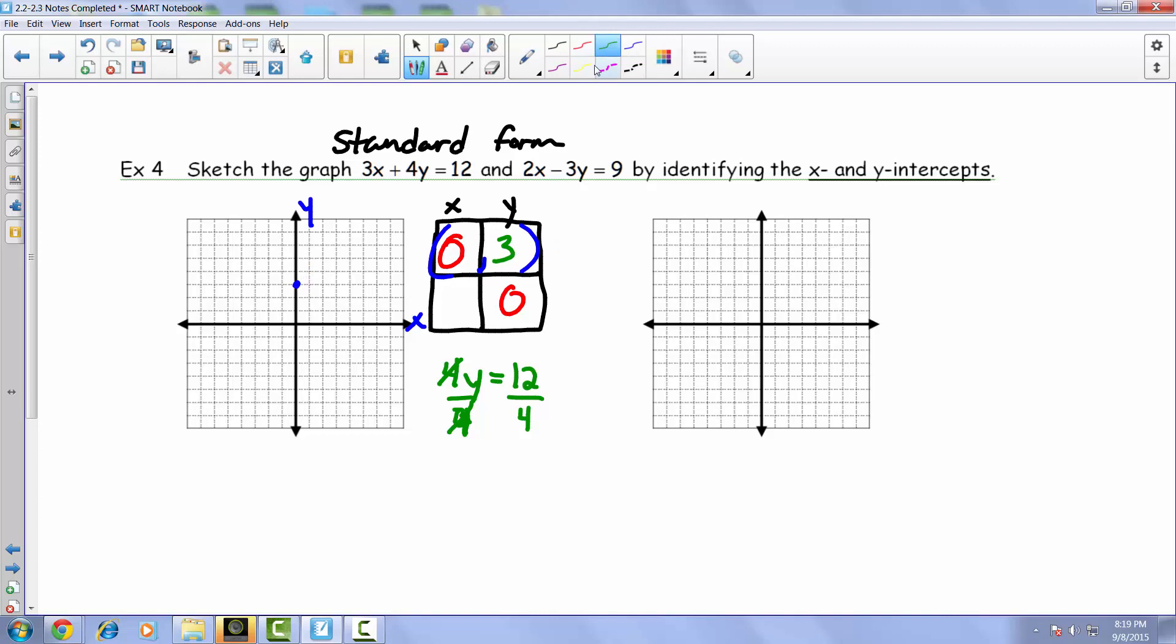Alternatively, we're trying to now find the x-intercept. Well, if it's in fact crossing this x-axis, our y-value is going to be 0 because we're not moving up or down any for x. And that's why we can throw in 0 for y specifically. When we throw in 0 for y, we end up with 4 times 0.